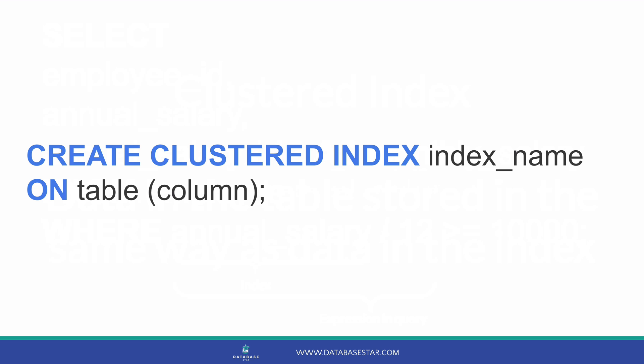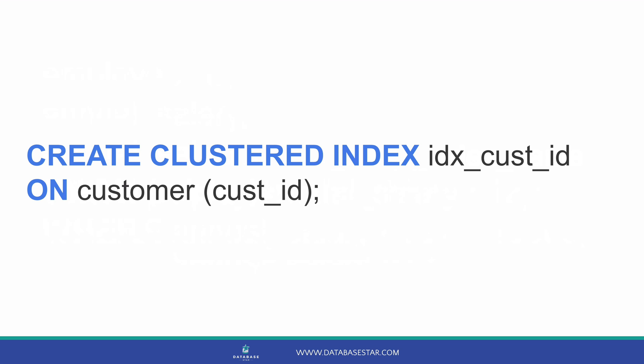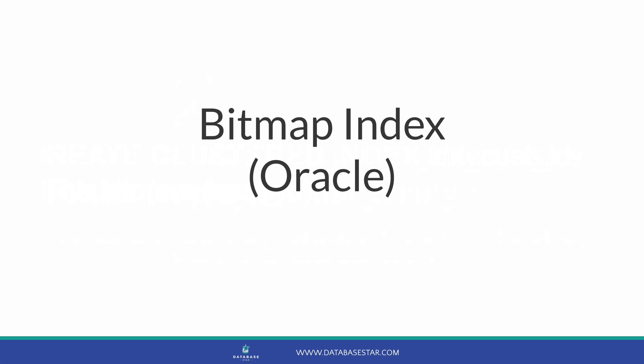To create a clustered index in SQL Server, we add the word clustered before the word index. Here's an example — we can see the CREATE CLUSTERED INDEX command, which will create a new clustered index on the table. Another type of index is a bitmap index. A bitmap index looks like a two-dimensional map or a table of values, and as far as I know, bitmap indexes are only available in Oracle.